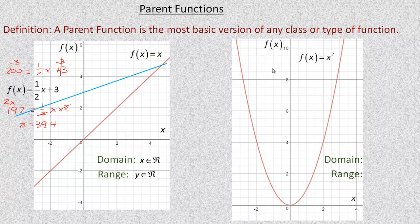The second function is called a parabola or a quadratic function. The most basic version is f(x) = x² or y = x². The domain is all real numbers — there's no number that I can't square. I can square any number: positive, negative, a decimal, a root, a fraction — it doesn't matter. Any real number can be squared, so the domain is all real numbers.